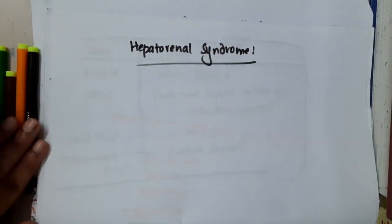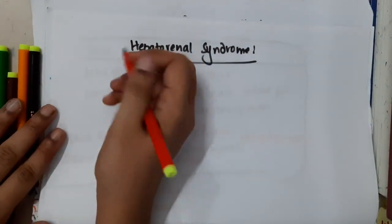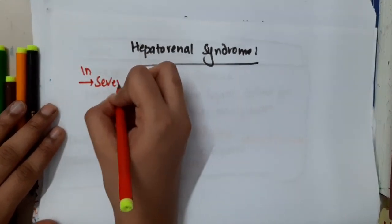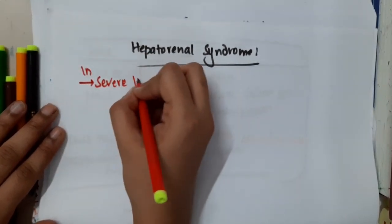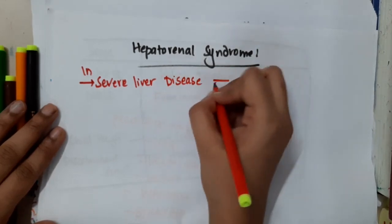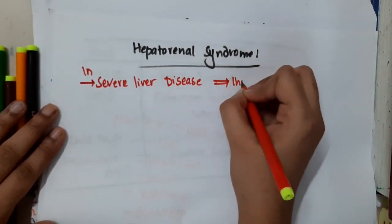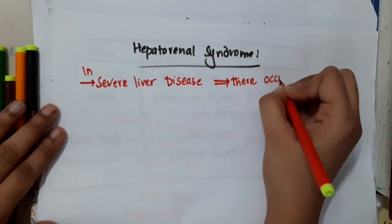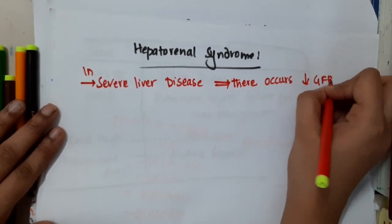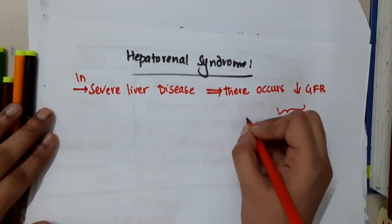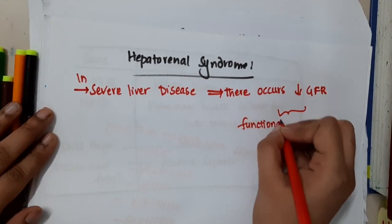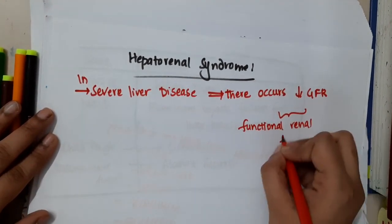Hepatorenal syndrome is defined as a state in patients with severe liver disease. In severe liver disease, there occurs a decrease in GFR — that means it is a state of functional renal failure.